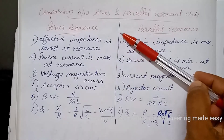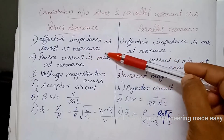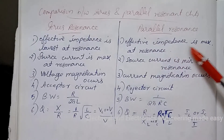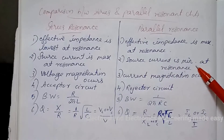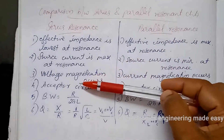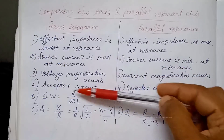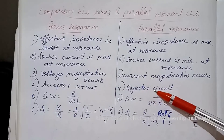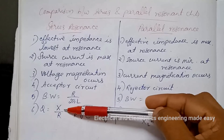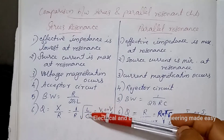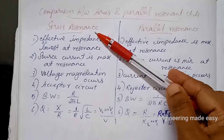Next is the comparison between series and parallel resonant circuits. In series resonance, effective impedance is lowest at resonance, whereas in parallel resonance effective impedance is maximum. Source current is maximum at resonance in series resonance and minimum in parallel resonance. Voltage magnification occurs in series resonance, whereas current magnification occurs in parallel resonance. Series resonant circuit is called an acceptor circuit, whereas parallel resonant circuit is called a rejector circuit. For series resonance: bandwidth equals R by 2·pi·L, and Q factor equals XL or XC by R, also equal to 1/R times square root of L by C, also equal to VL or VC divided by V.